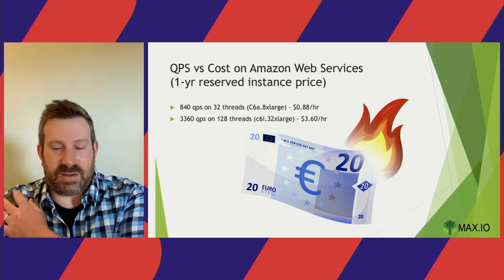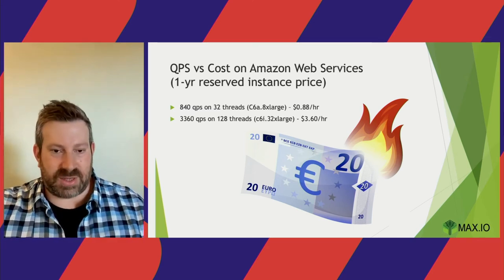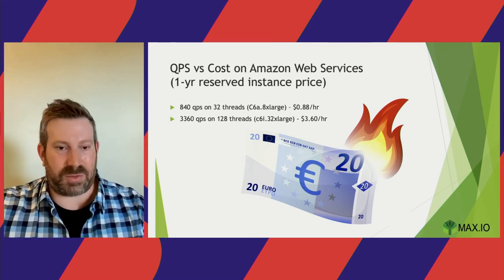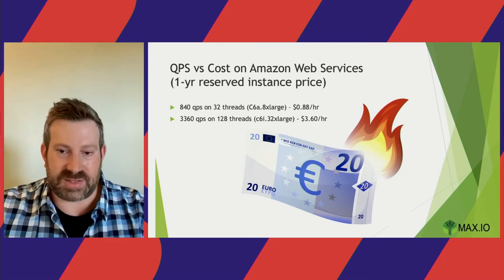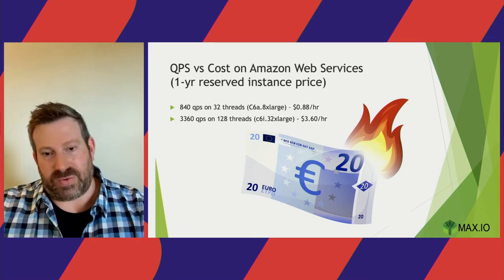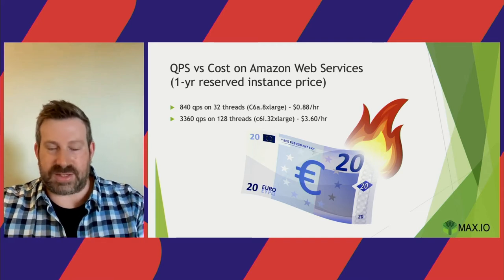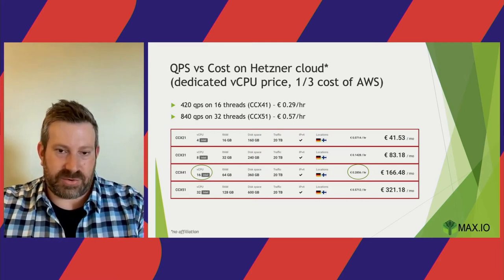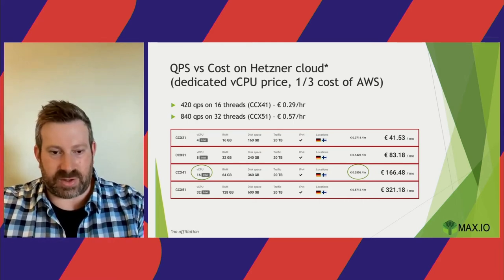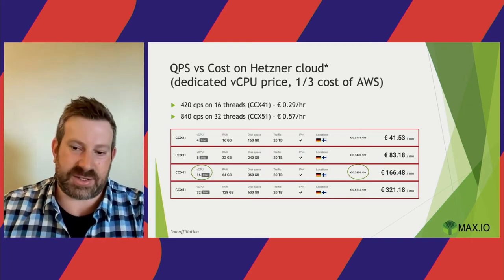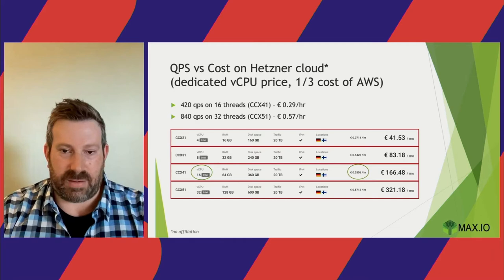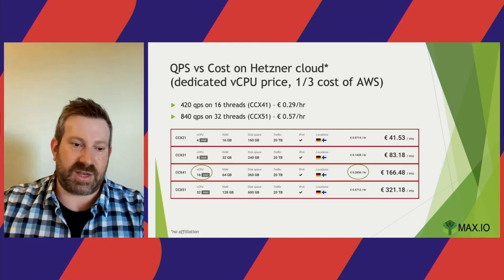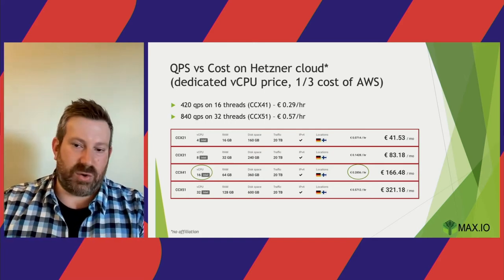The cost for this can be quite expensive. On Amazon, a one-year reserved instance for a compute-optimized machine is about $3.60 per hour, or roughly $0.88–$0.90 on a 32-thread machine. But you can get things a lot cheaper — for example, using something like Hetzner Cloud (no affiliation, just an example). You can calculate how many CPUs you need based on your required queries per second and do a cost analysis to understand what it'll cost to host an inference server meeting your customer requirements.